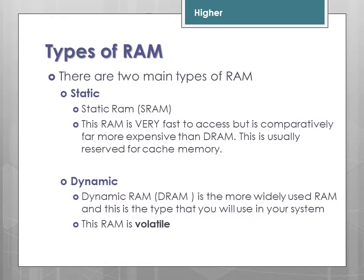If you look at RAM, there are actually two types: static RAM and dynamic RAM. Static RAM is very, very fast, but comparatively it is much more expensive than dynamic RAM. Dynamic RAM is the conventional RAM that you would upgrade your machine with. Static RAM is usually reserved for cache memory, which we will talk more about shortly.